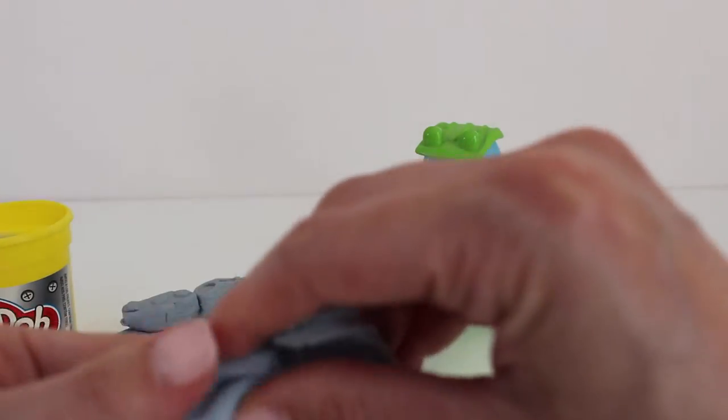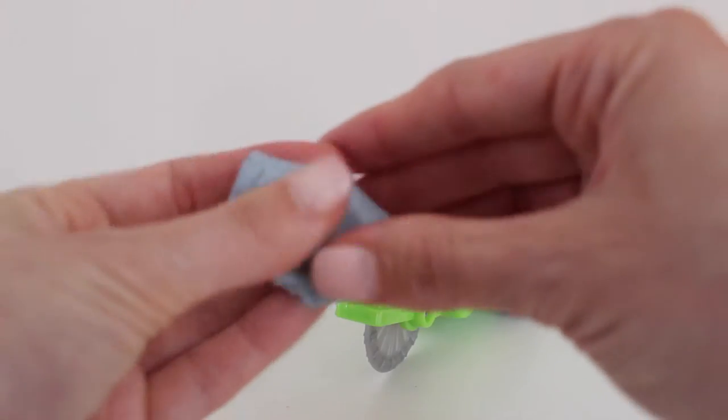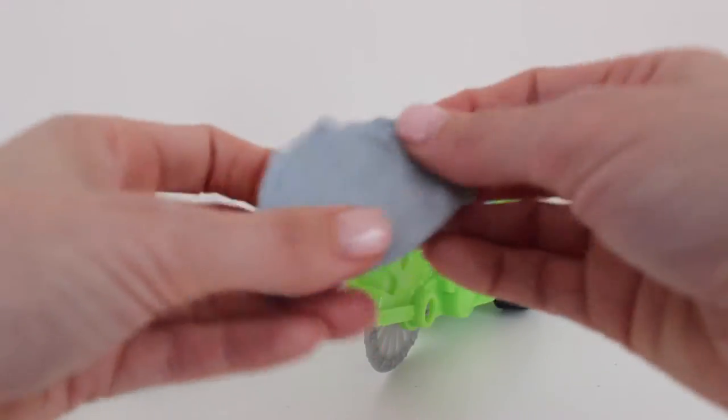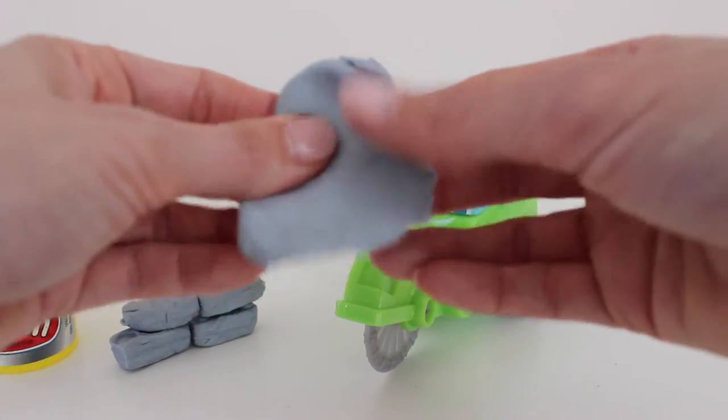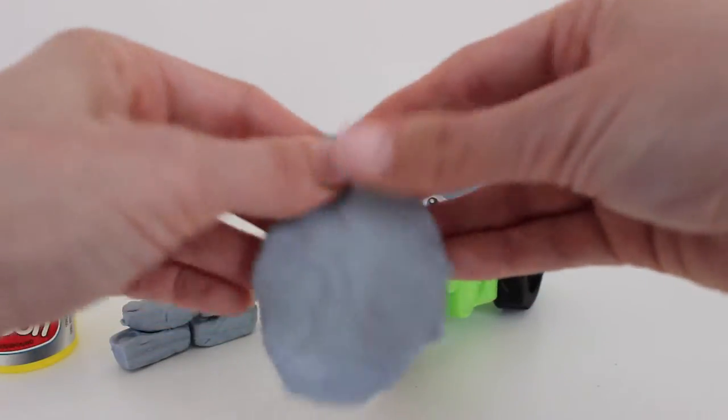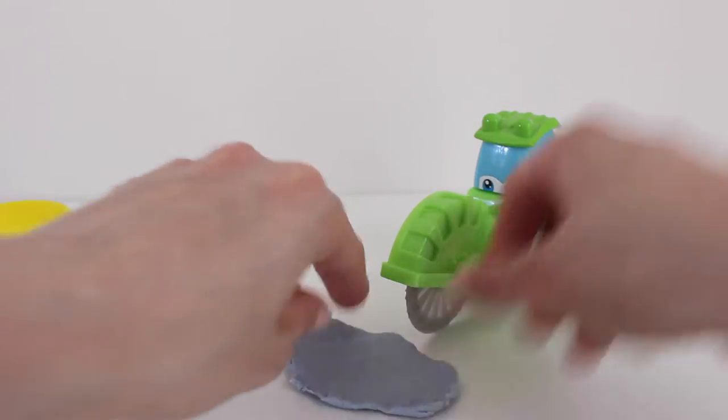This truck is a cutter truck which means that it can also cut through sheet metal. So if I shape this gray Play-Doh into a piece of metal that you might find at a construction site. And we'll put it right on the ground.